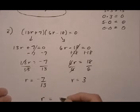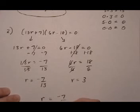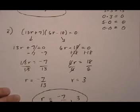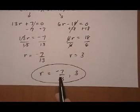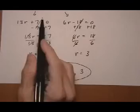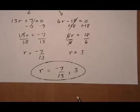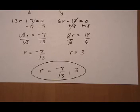So we would show our final answer. R is minus seven thirteenths or three. And if you plug either of the solutions back into the factors, you will see that they multiply out to give a zero because it makes one of the factors go to zero.